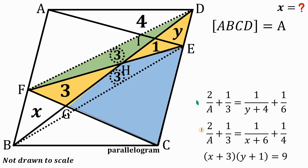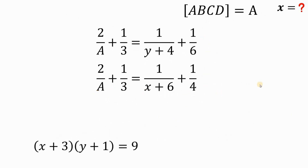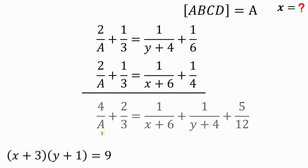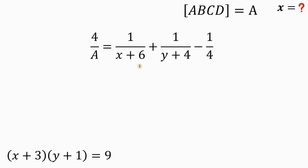With three equations, let's focus on combining the two ladder-theorem results. Adding them: 4 over A plus 2 over 3 equals 1 over (X + 6) plus 1 over (Y + 4) plus 1 over 6 plus 1 over 4, which gives 5 over 12. Subtracting 2/3 from both sides gives 5/12 minus 2/3, which is negative 1/4. If we can find the value of 1/(X+6) + 1/(Y+4), we can determine A, the area of parallelogram ABCD.